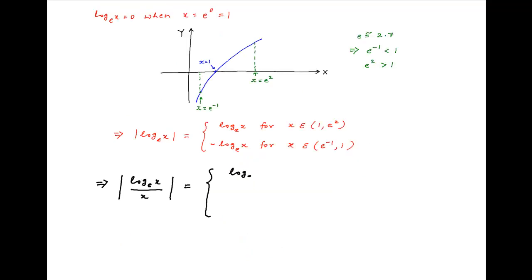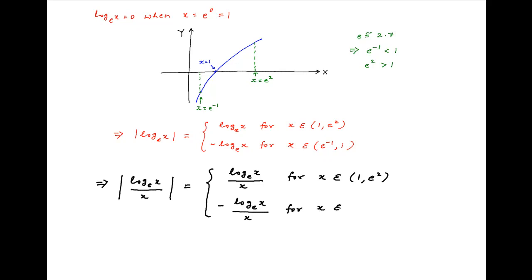Therefore the integrand, modulus of ln x upon x, is equal to plus ln x upon x for all values of x lying between 1 and e square, and is equal to minus ln x upon x for all values of x lying between e raised to the power minus 1 and 1.